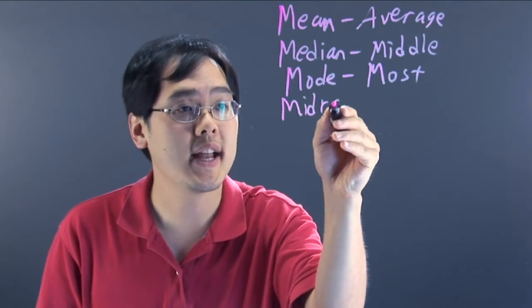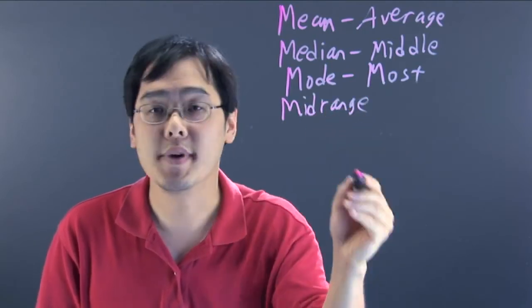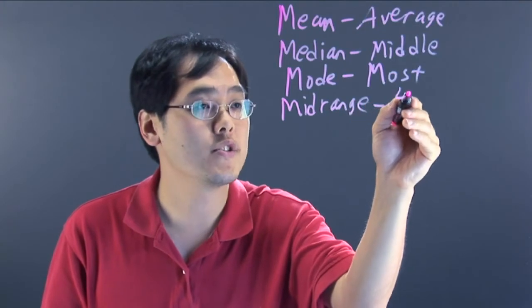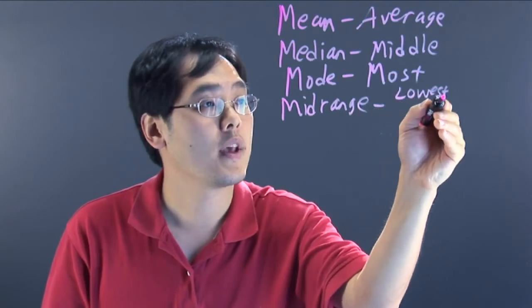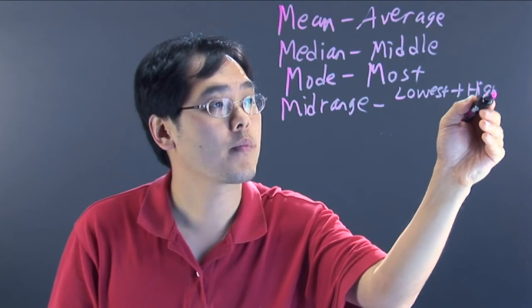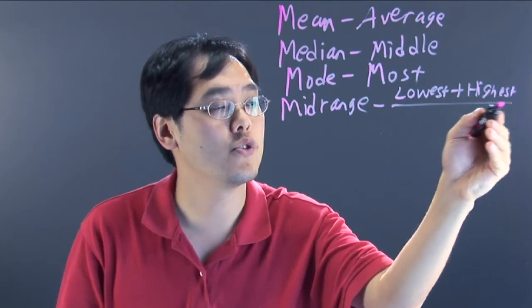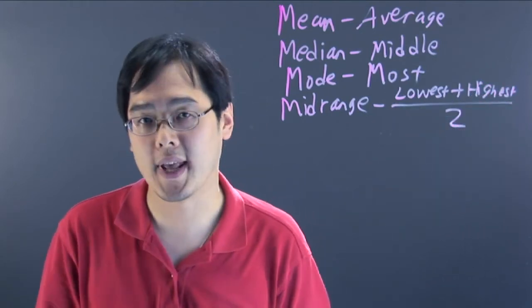Another one you may be asked to find is that of the midrange. Now the midrange, you're taking the lowest number and you're going to add it with the highest number and then you're going to divide by two. That's a pretty straightforward calculation there.